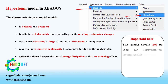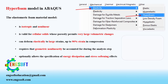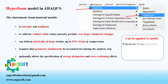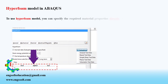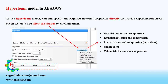Important note: this model should not be used for approximately incompressible materials, i.e., materials with an effective Poisson's ratio greater than 0.45. This model can be applied to model polymeric foam materials, soft tissues, and similar materials. To use the hyperfoam model, you can specify the required material properties directly or provide experimental stress-strain test data and allow Abacus to calculate them.